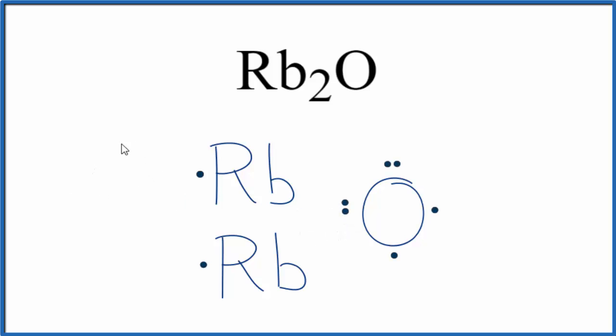So since this is an ionic compound, we're going to transfer electrons. We'll transfer the valence electrons from the metal to the non-metal. Oxygen has six valence electrons right now. If it can get two more, it'll be stable.